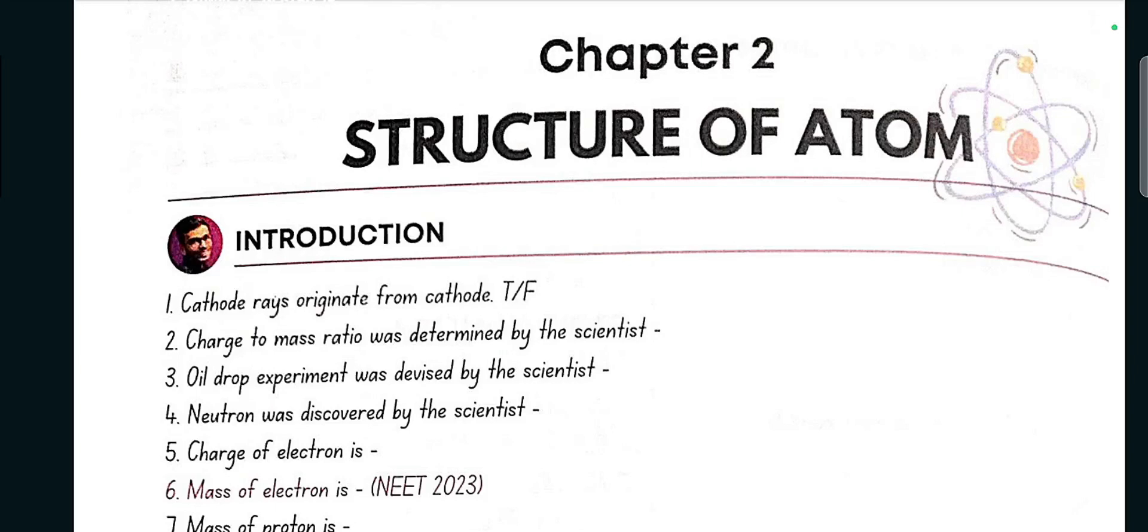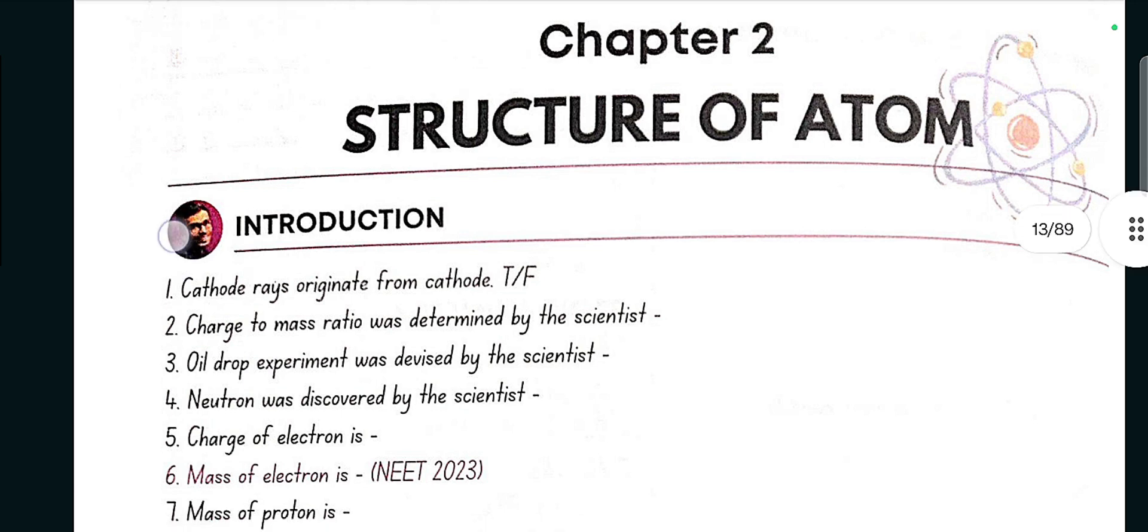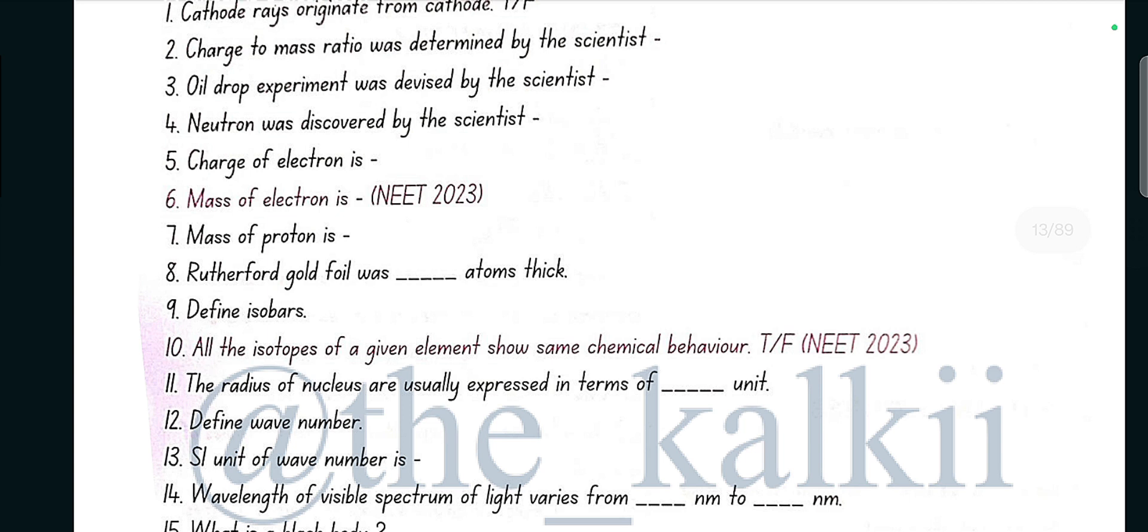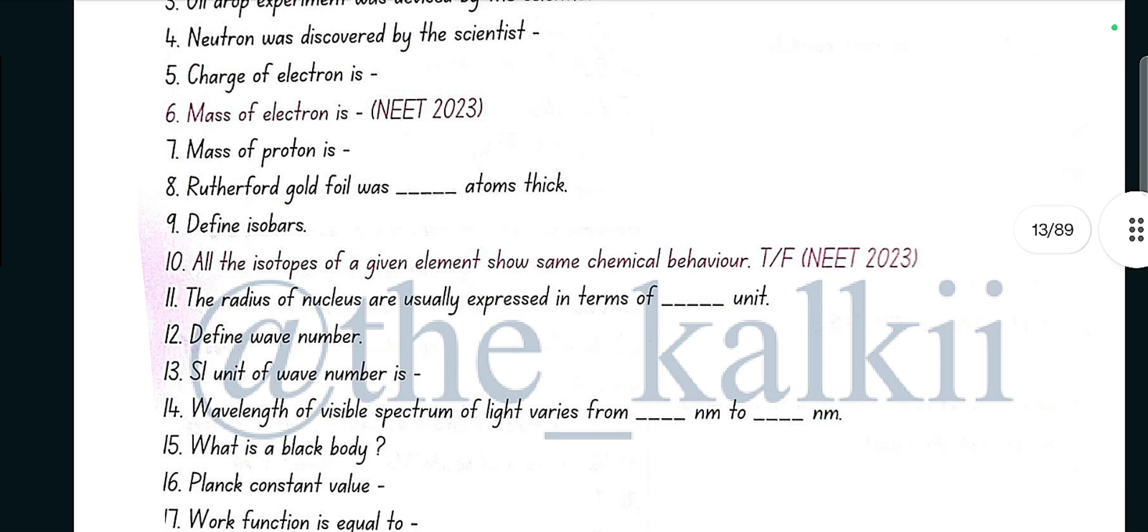Chapter 2: Structure of Atom. Introduction. Cathode rays originate from cathode, yes true. Charge to mass ratio was determined by the scientist J.J. Thomson. Oil drop experiment was devised by the scientist R.A. Millikan. Neutron was discovered by the scientist Chadwick. Charge of electron is minus 1.6 into 10 raised to the power minus 19 coulomb.